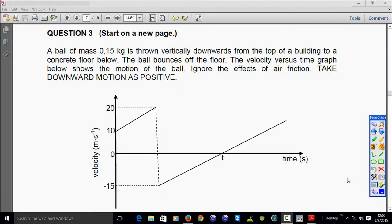A ball with a mass of 0.15 kilos is thrown vertically downward from the top of a building to the concrete floor below. The ball bounces off the floor.